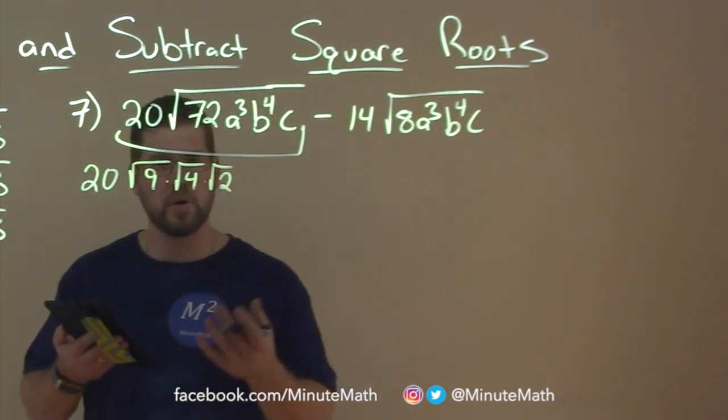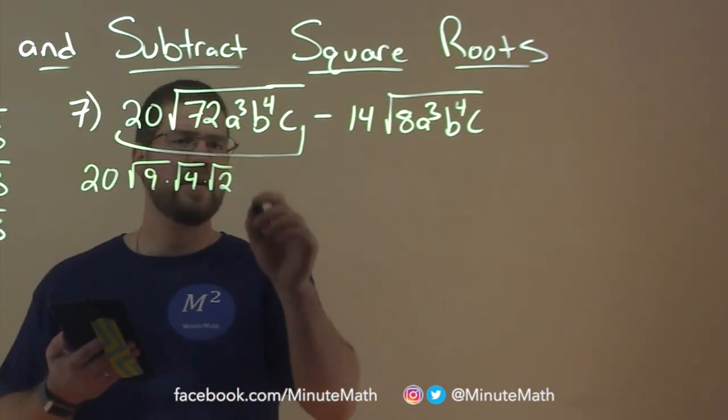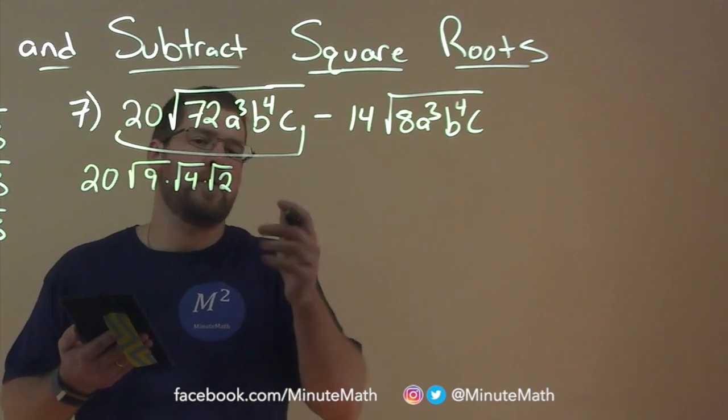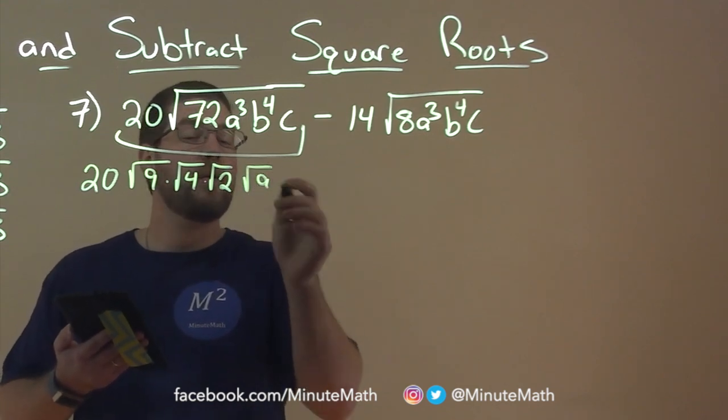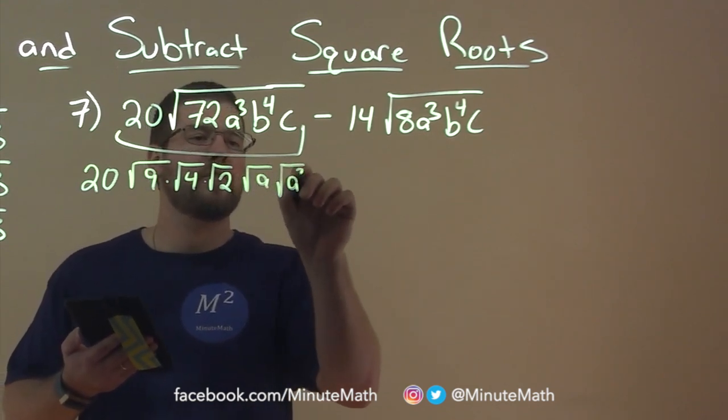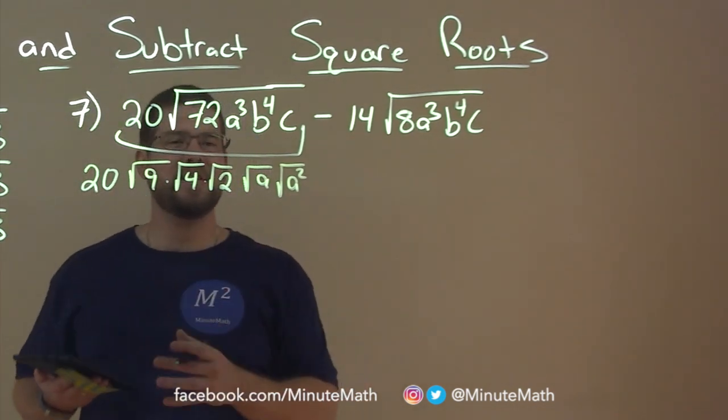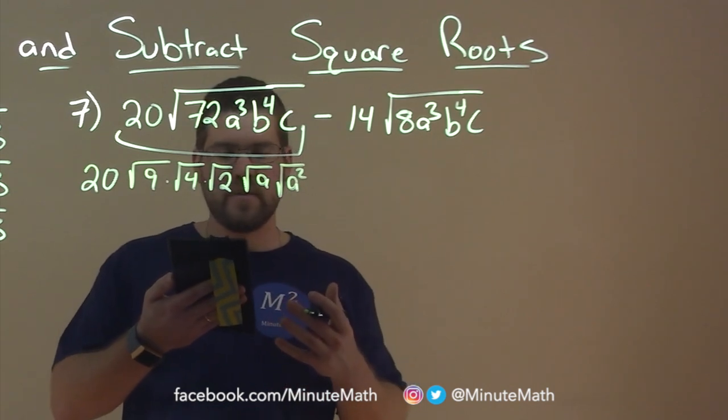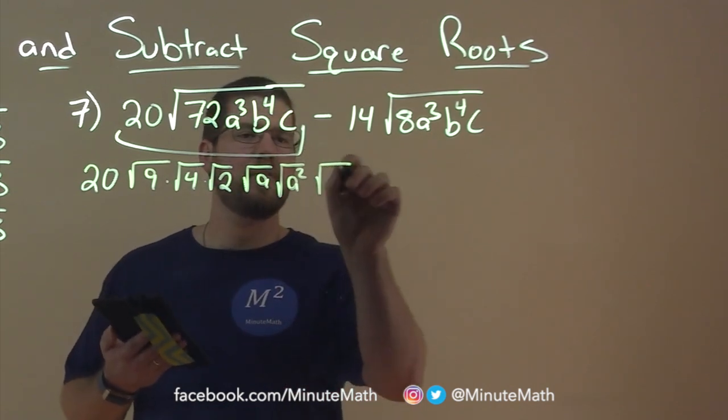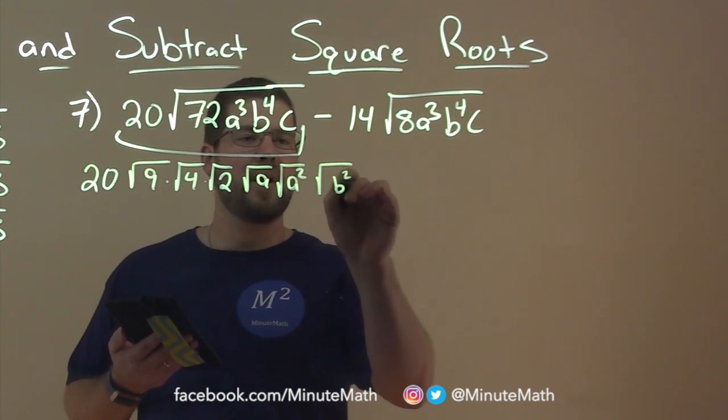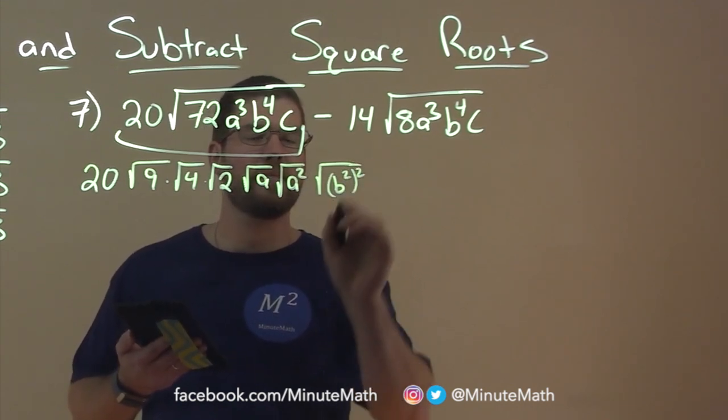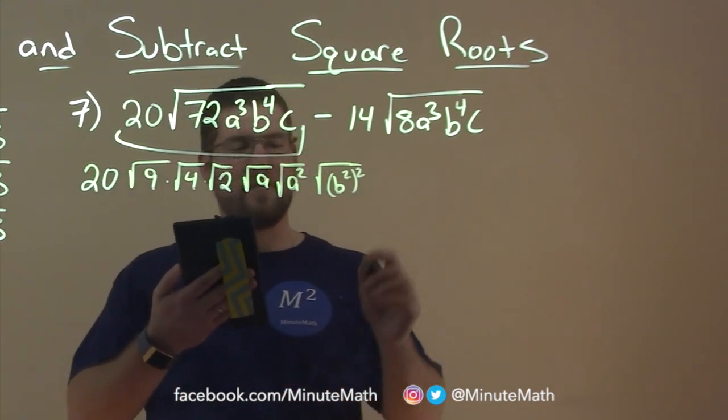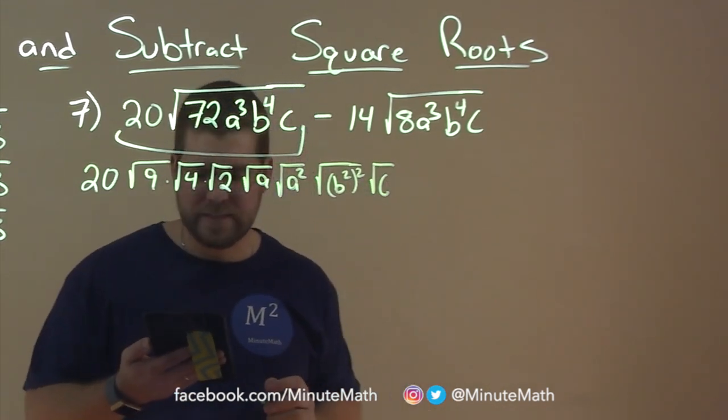Then a to the 3rd. Well, it's three a's, but a squared we know we can take a square root of. So it's square root of a times square root of a squared. I'm trying to break things down to terms that we can easily take the square root of. b to the 4th, luckily for us, is easy to take a square root, but if it makes it easier, you can take a square root of b squared squared. And then lastly, we have c, just square root of c here by itself.